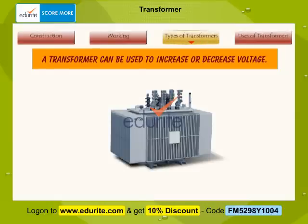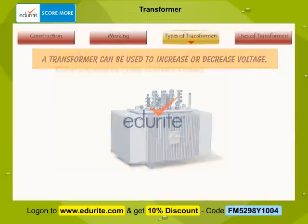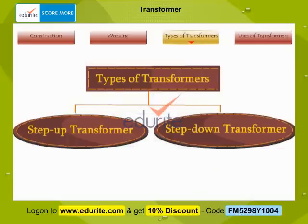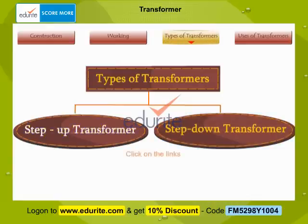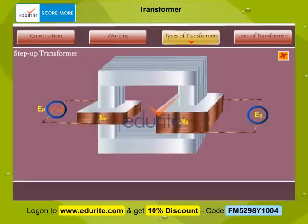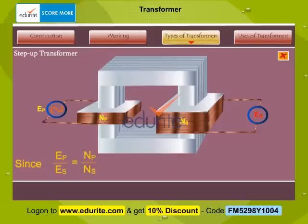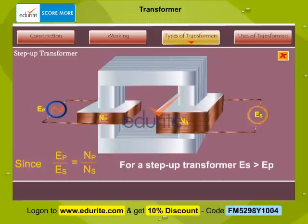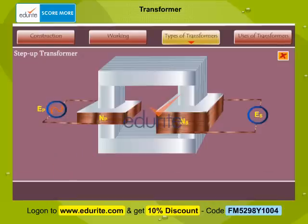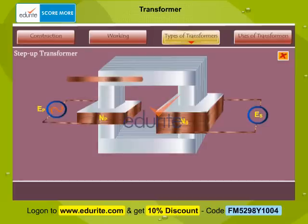A transformer can be used to increase or decrease voltage. Based on this, transformers are classified as step-up transformer and step-down transformer. The step-up transformer increases voltage. Since EP by ES is equal to NP by NS, for a step-up transformer ES is greater than EP, therefore the number of turns of the secondary coil is greater than that of the primary coil. In this type of transformer, the primary coil is made of thick copper wire while the secondary coil is made of thin wire.